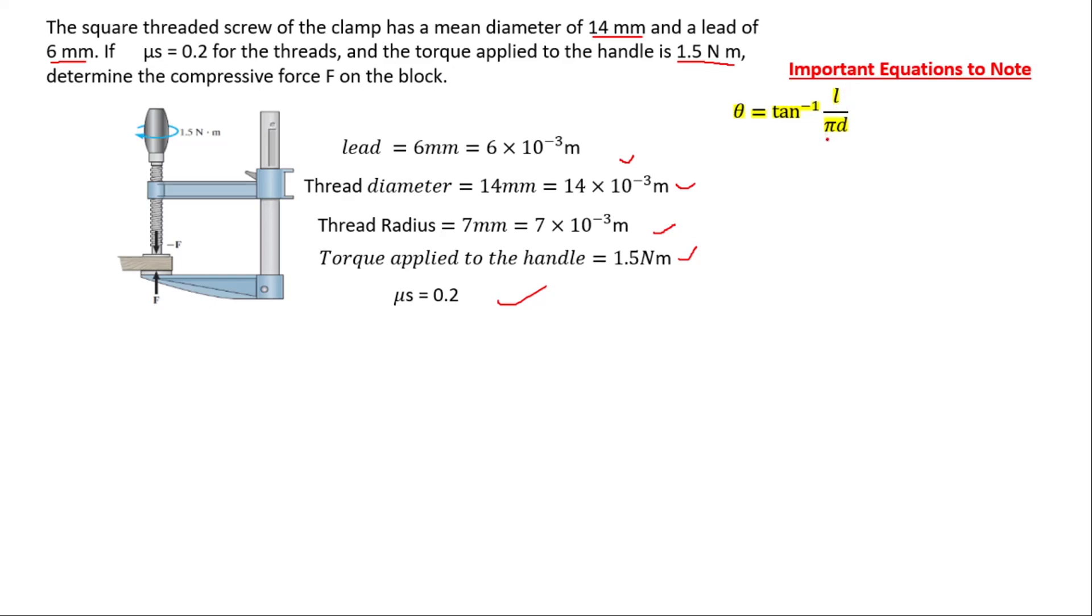And also we have pi, the pi value which is 3.141592654. It's an irrational number. And also we have the diameter of the thread. So this is the first equation to note to find the helix angle or the thread angle.